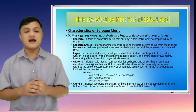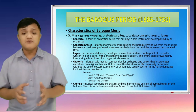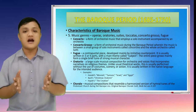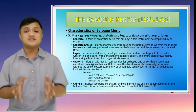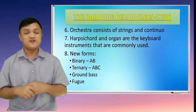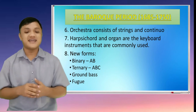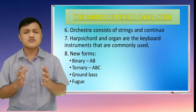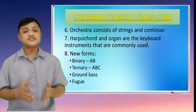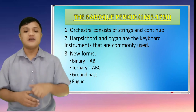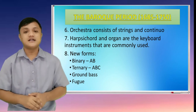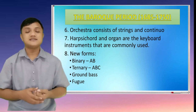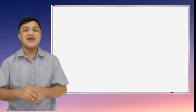The chorale is a musical composition that resembles a harmonized version of hymn tunes of the Protestant church during the Baroque era. The orchestra consists of strings and continuum. The harpsichord and organ are the keyboard instruments commonly used. The forms of the Baroque period include the binary, the ternary with three parts A-B-C, the ground bass, and the fugue. That ends our discussion.